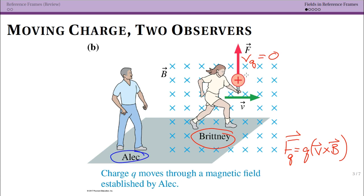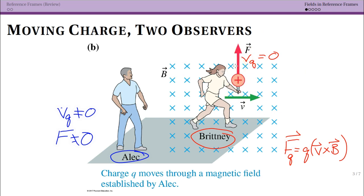The force from a magnetic field on a charge is F = QV×B. If Brittany says V equals zero, then the force is zero. But in Alec's reference frame, the charge is moving, so VQ is not zero and the force is not zero. Doing V×B — V is to the right, the charge is positive, the magnetic field is into the page — you get a force upward.